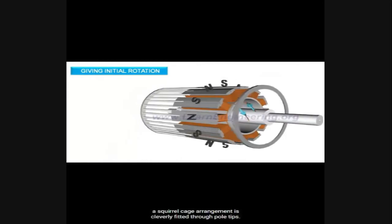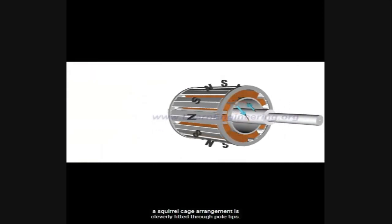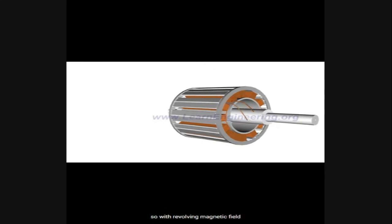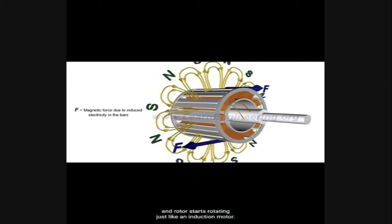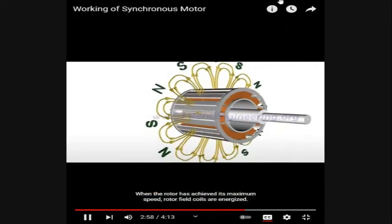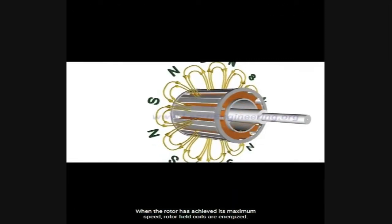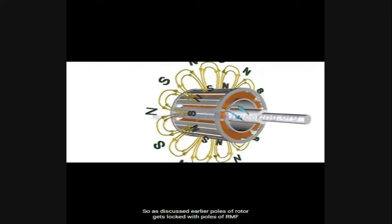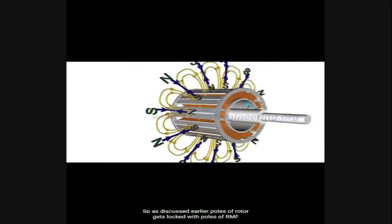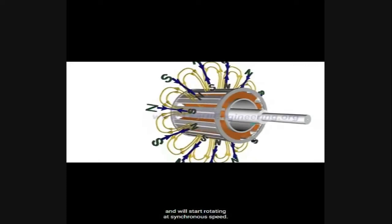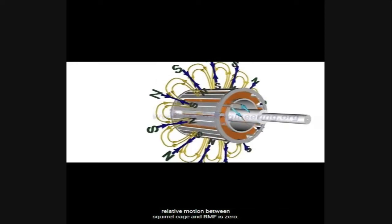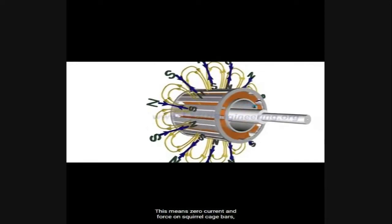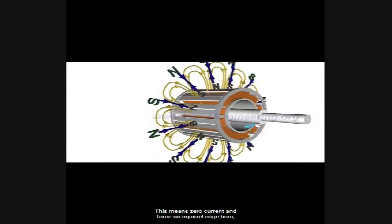To make a synchronous motor self-starting, a squirrel cage arrangement is fitted through the pole tips. At starting, the rotor field coils are not energized, so with the revolving magnetic field, electricity is induced in the squirrel cage bars and the rotor starts rotating just like an induction motor. When the rotor achieves its maximum speed, the rotor field coils are energized and the poles of the rotor get locked with the poles of the RMF, rotating at synchronous speed. At synchronous speed, relative motion between the squirrel cage and RMF is zero, meaning zero current and force on the squirrel cage bars.